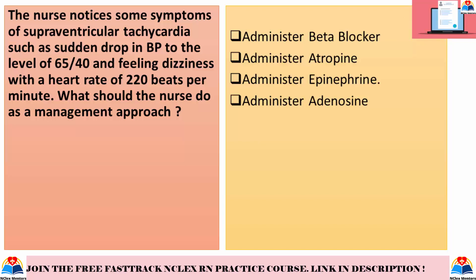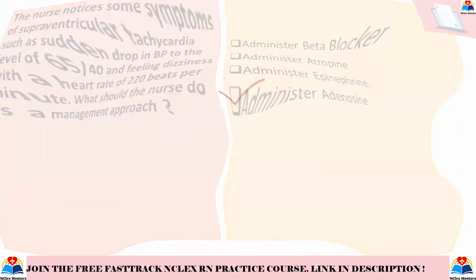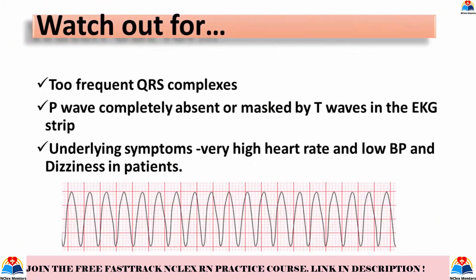The patient is already suffering from hypotension, so a beta blocker is not appropriate. Atropine is also incorrect as it can increase the heart rate, which is already very high and may lead to heart failure. Epinephrine is also out as it would further increase the heart rate. The correct answer is adenosine, given as a rapid intravenous bolus injection. Adenosine slows cardiac conduction, particularly affecting conduction through the AV node. Remember to watch for frequent QRS complexes with P-waves completely absent or masked by T-waves on the EKG strip to identify supraventricular tachycardia, along with symptoms such as very high heart rate, low BP, and dizziness.